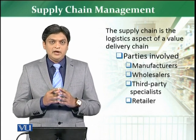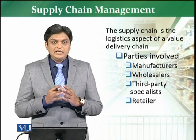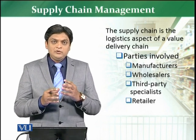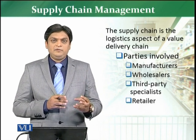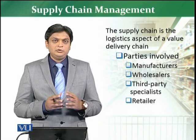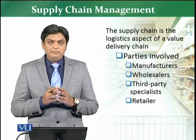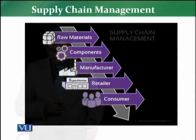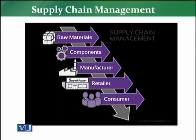Retailers are the ones who actually sell the product to the customer. In the value delivery network, the chain starts from the manufacturer all the way to the consumer, and the product reaches the consumer through the proper supply chain. To understand supply chain management completely, take any product — it starts from the raw material, then procurement of raw material, then the components.